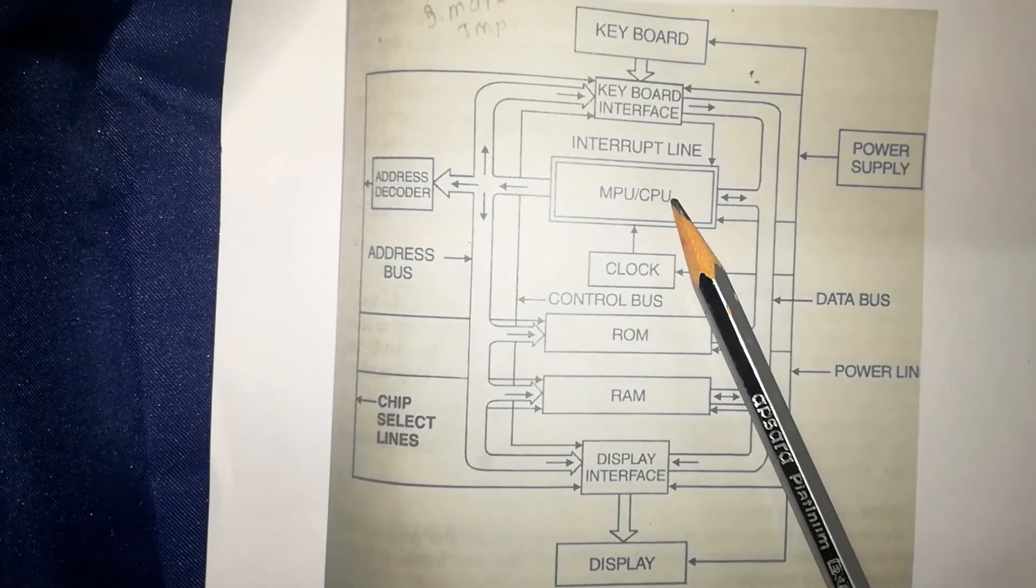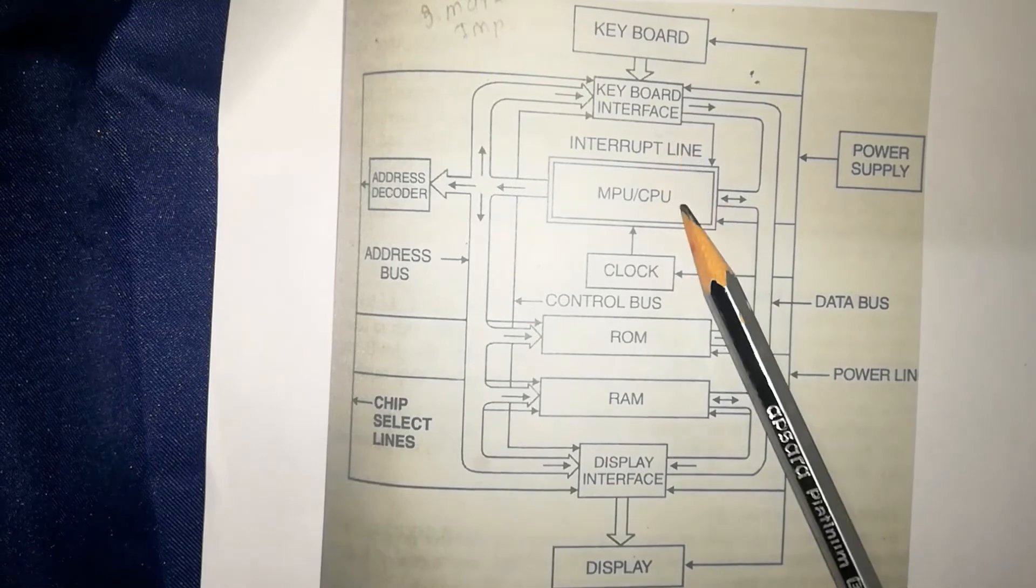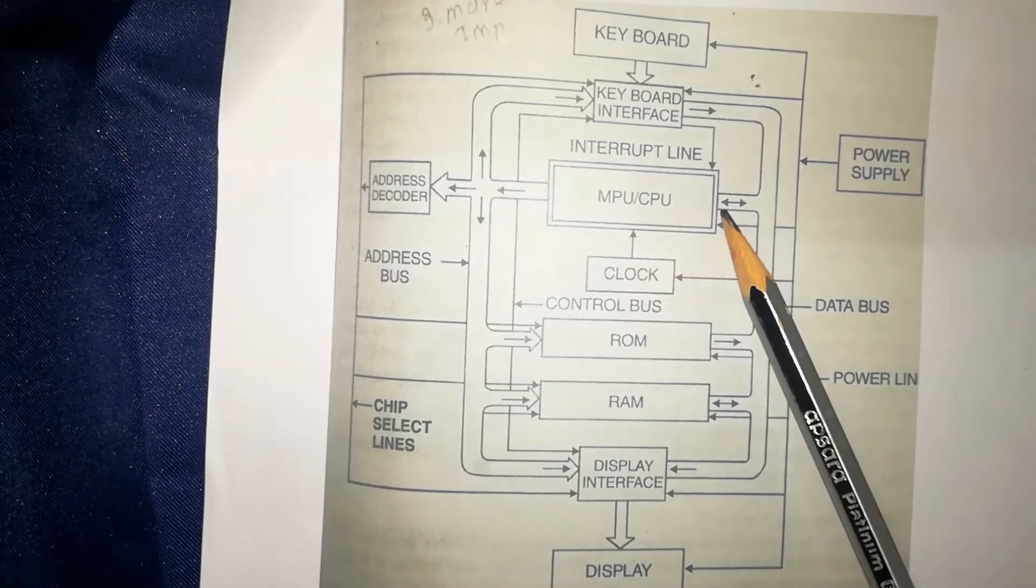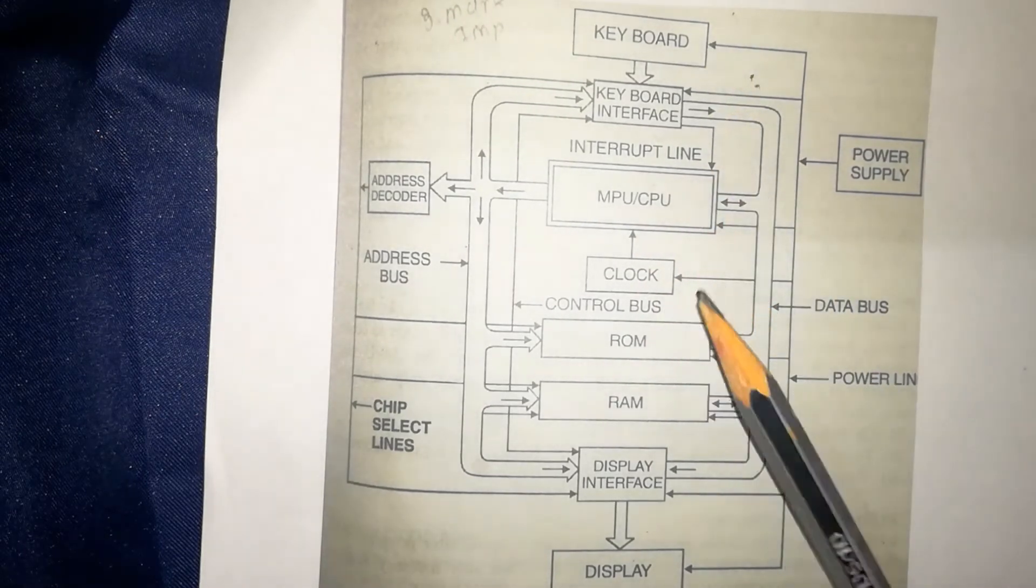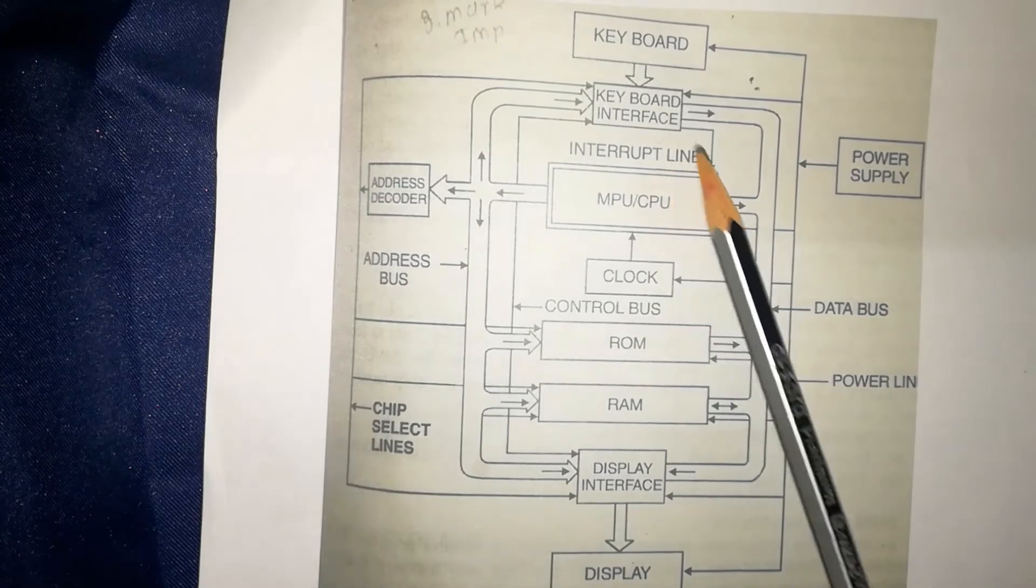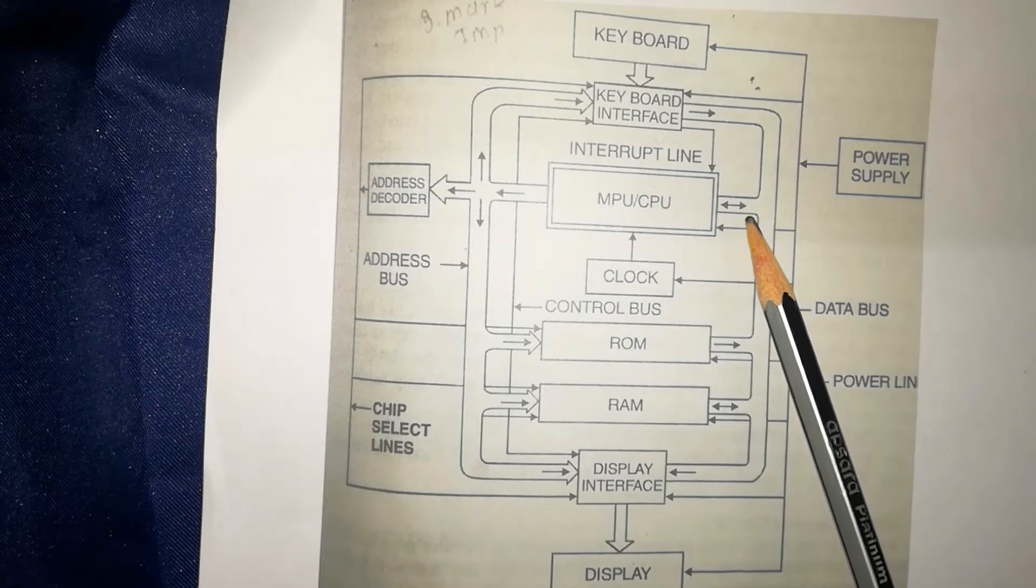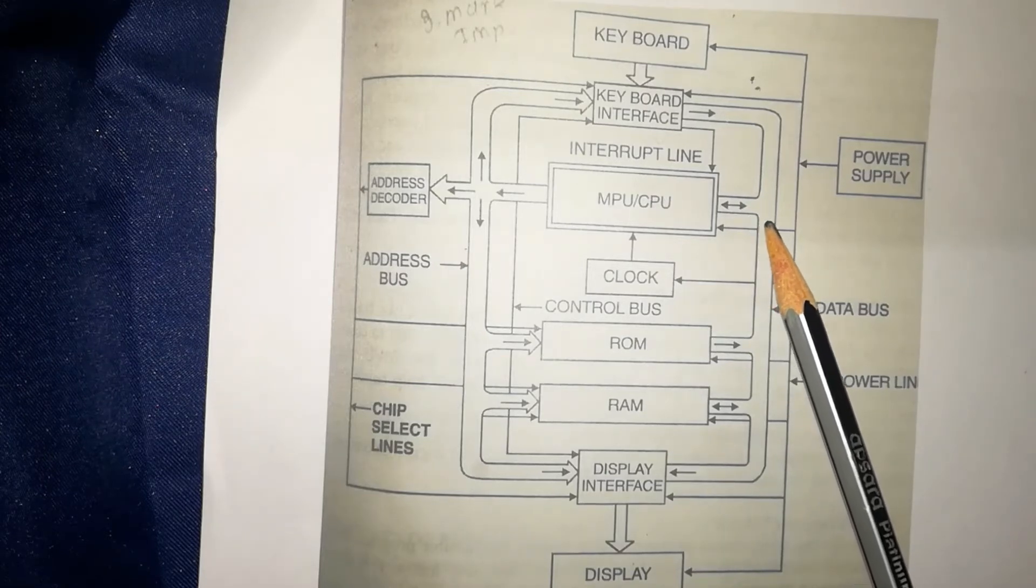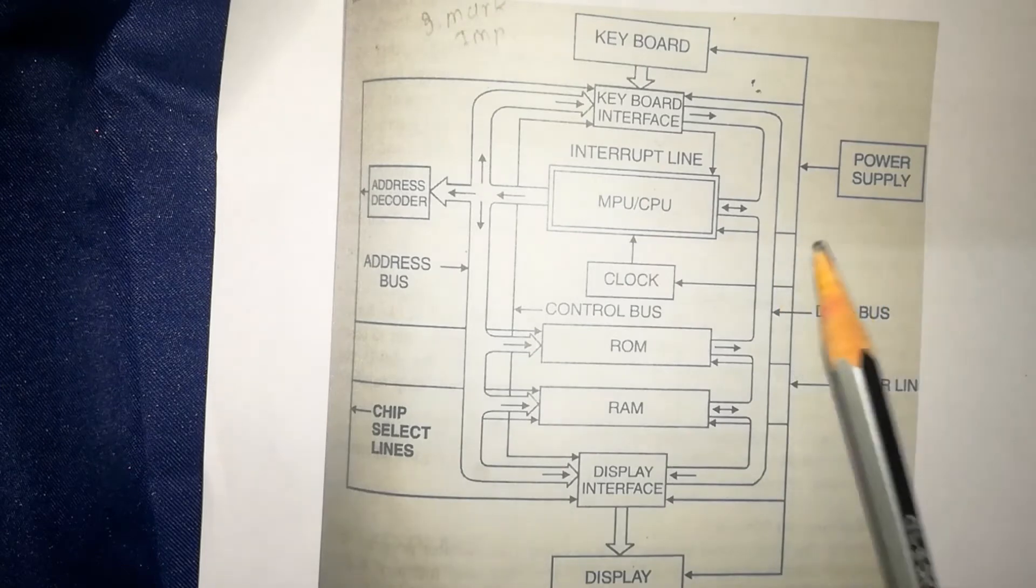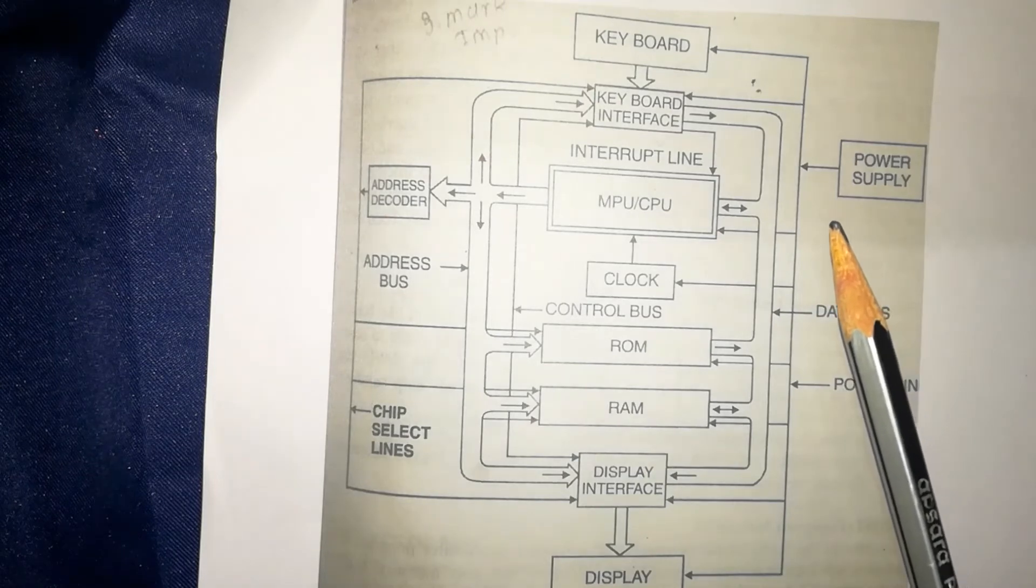The data from keyboard will not directly be sent to the MPU or CPU, as MPU may be busy in doing other work or previous instruction work, or the speed of the input device and MPU may not be equal because we all know the speed of CPU is much more than the user. Now the keyboard interface sends an interrupt signal to the MPU to tell that data or instructions are ready to dispatch.